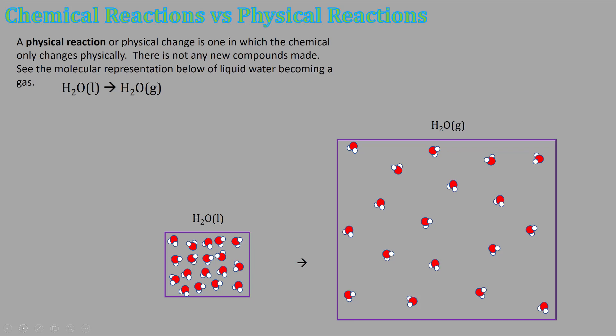A physical reaction or physical change is one in which the chemical only changes physically. There are not any new compounds made. If we boil water, you can put a pan of water on the stove and it turns from a liquid to a gas, but it's not a new chemical. It's the same chemical. Here we have liquid water where the molecules are really close together.